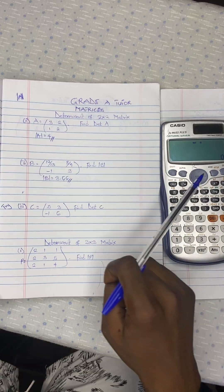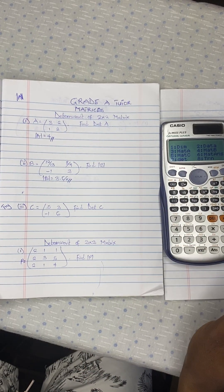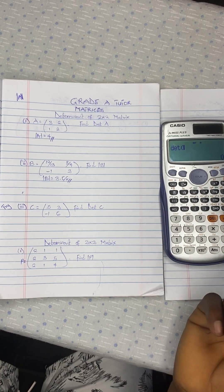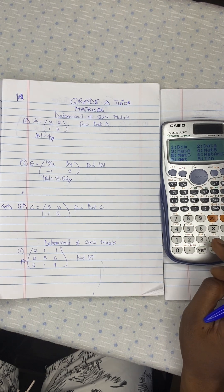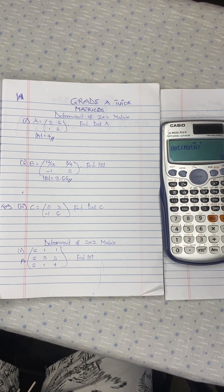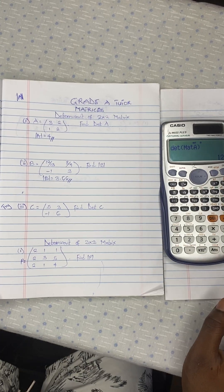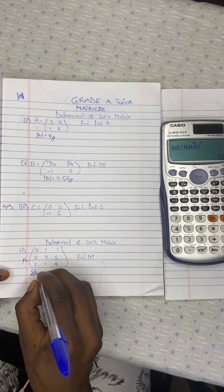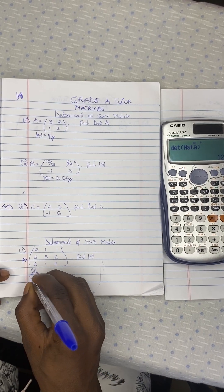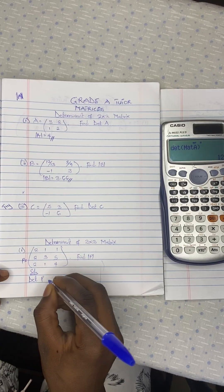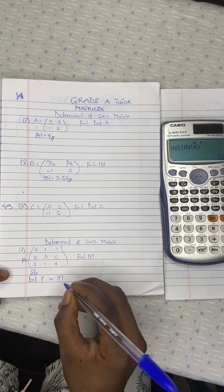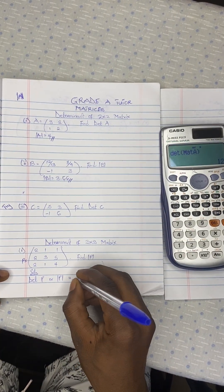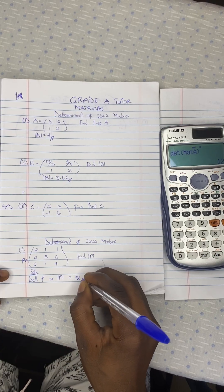Now you come to the menu. Shift 4. Then determinant is option 7. Now determinant of what? You bring your matrix A here and you close the brackets. So what do you do? You press here. And now your answer is equal to 12. So your determinant of P or that's P, or P like this is equal to 12.